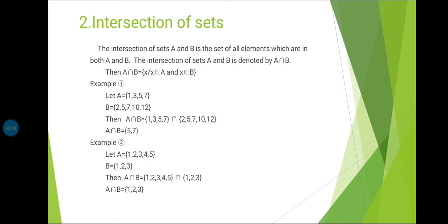Example 1: Let A = {1, 3, 5, 7} and B = {2, 5, 7, 10, 12}. The common elements of A and B are 5 and 7. Therefore A intersection B = {5, 7}.